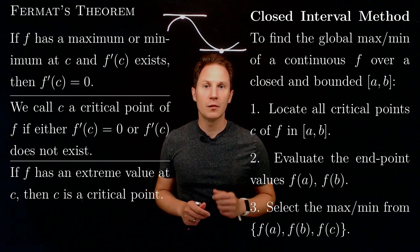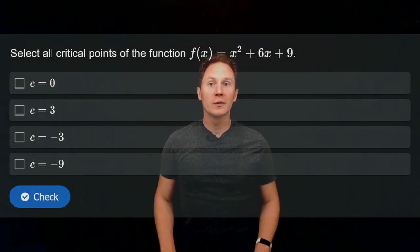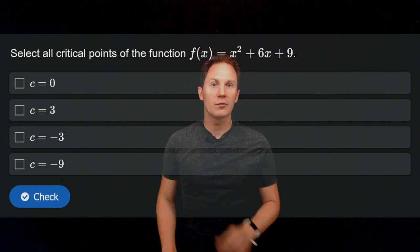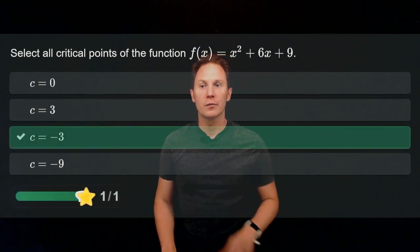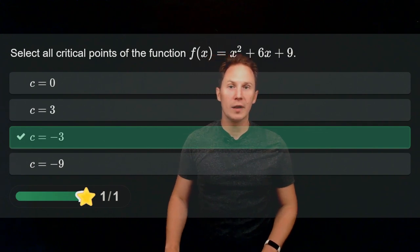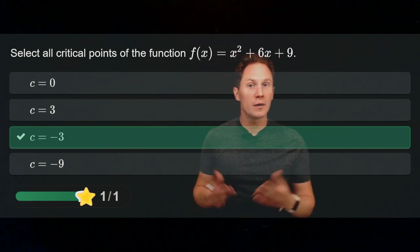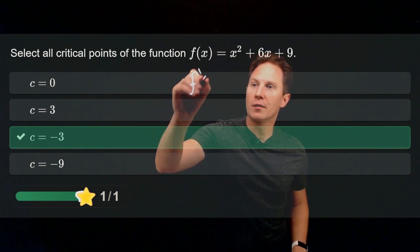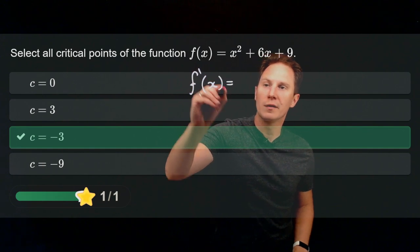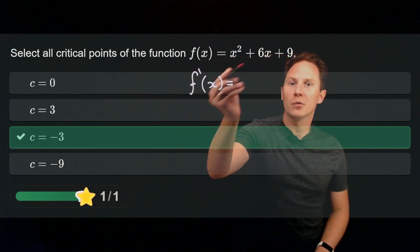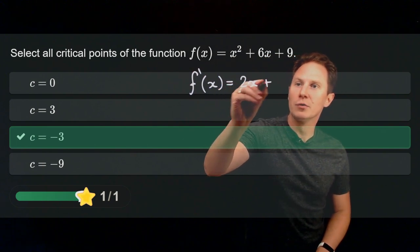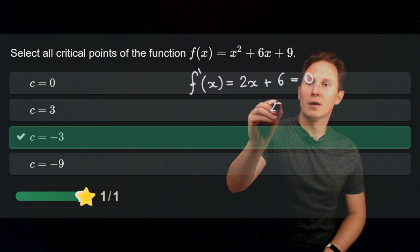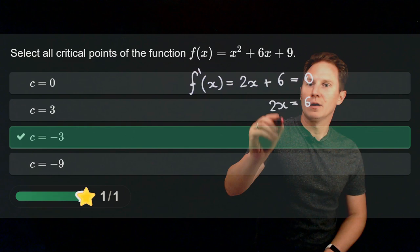Now let's see if you got the idea. Select all critical points of the function f(x) = x² + 6x + 9. The only critical point is c = −3. This is a polynomial function, differentiable everywhere, so we find where the derivative equals zero. Differentiating gives 2x + 6, and this equals zero if and only if x = −3.